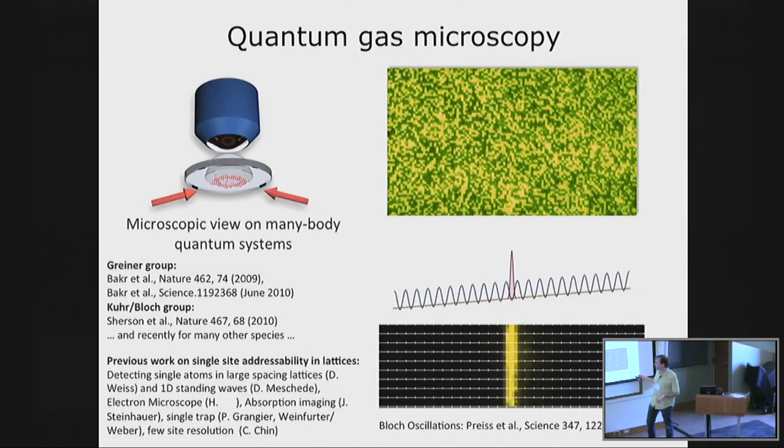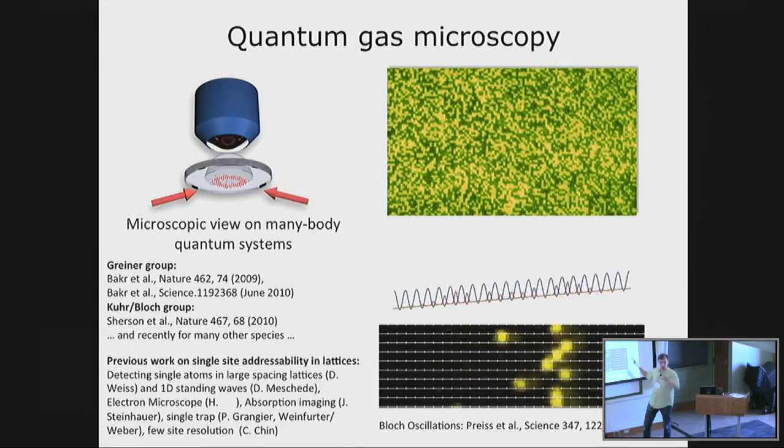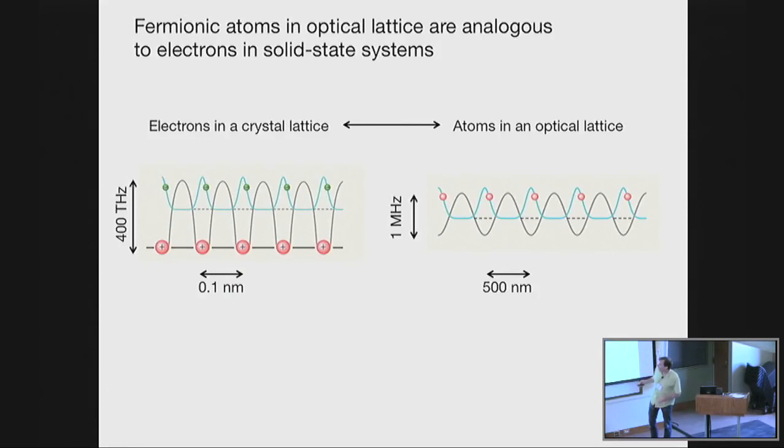A Bloch oscillation is actually a completely symmetric motion, and here we can observe a Bloch oscillation in a 1D lattice. What happens is that the atoms all come back to the original side — while they spread out they actually delocalize coherently. The system is pretty much completely coherent, so we can see how the atoms come back to the original side.